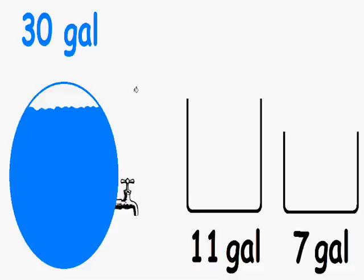And what we need to do is empty exactly half of the tank. Or in other words, we need to empty the tank so there's exactly 15 gallons of water left. But the problem is that we only have an 11 gallon and a 7 gallon container for measuring.